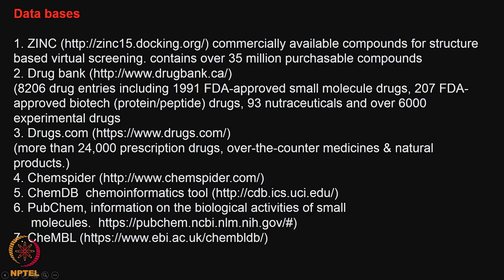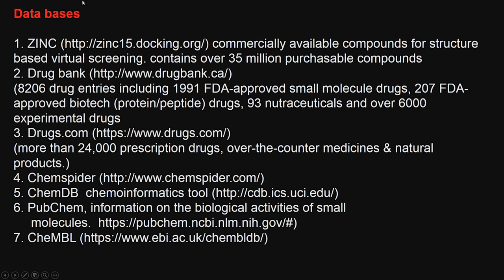In the first class I showed you some of the databases which contain structures of a large number of molecules. The ZINC database contains 35 million compound structures with some properties, and you can buy them if you want. Then we have DrugBank and drugs.com, which contain structures of drugs currently available in the market — over-the-counter drugs, FDA approved, biotech drugs and so on. We also have ChemSpider, ChemDB, PubChem, and ChEMBL — all contain structures of large numbers of molecules, searchable and with properties such as molecular weight, solubility and so on.